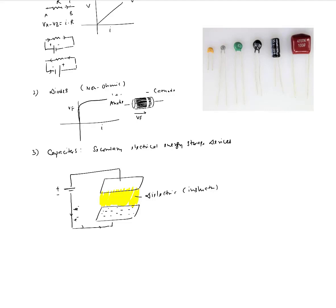The positive terminal pulls electrons away from the upper metal plate, causing it to become positively charged. Current flows only externally through the circuit — there is no flow of current through the dielectric medium. Even though one plate is positively charged and the other negatively, there is an electric field established, but there is no way for electrons to move from the negative plate to the positive plate because of the dielectric.